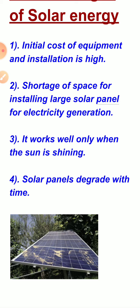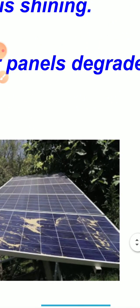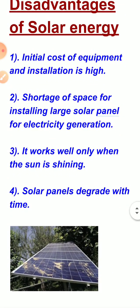Solar panels will work well only when the sun shines, so it can be a problem on rainy days and in winters. Solar panels also have a particular lifetime, after which they can degrade, as we can see in this picture. The efficiency of energy also becomes less as the panels age, which is another disadvantage of solar energy.